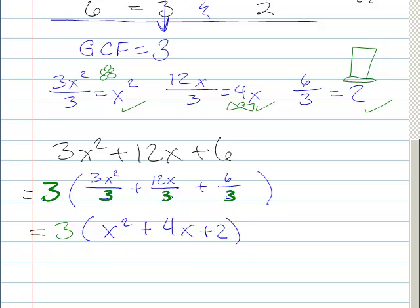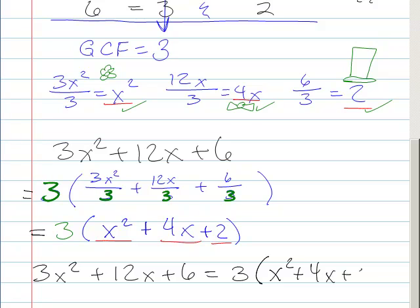And you'll see, of course, that the x squared is this x squared, the 4x is this 4x, and the 2 is this 2. So this is perfectly factored. So we've got 3x squared plus 12x plus 6 is equal to 3 times x squared plus 4x plus 2.